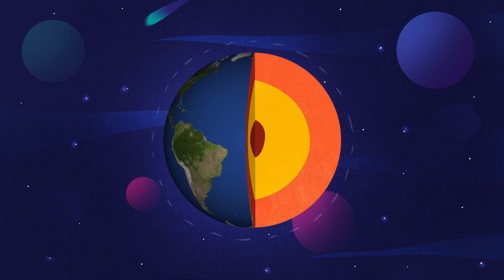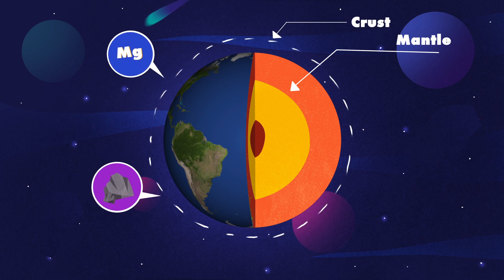The Earth is separated into four layers. The outermost layer is called the crust. Then, there's the mantle, which is made of silicate rocks, magnesium, and iron.